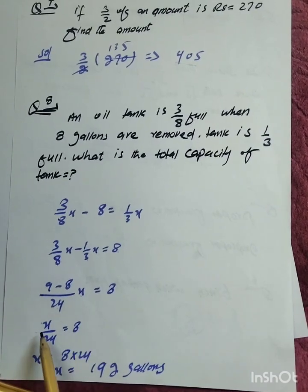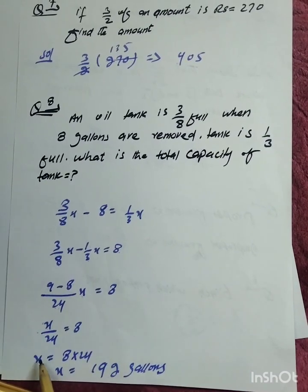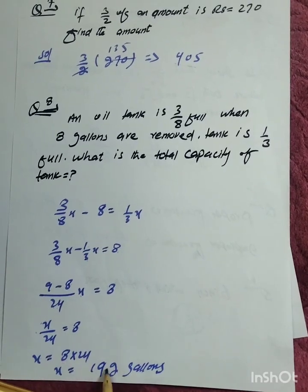Multiplying both sides by 24 gives x equals 192. The total tank capacity is 192 gallons.